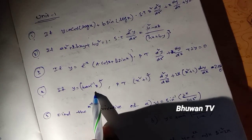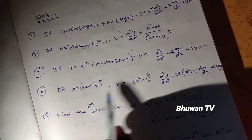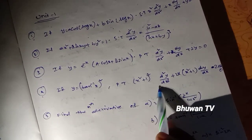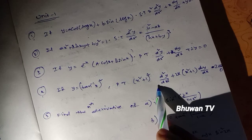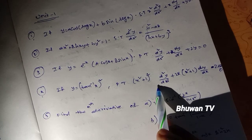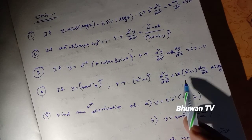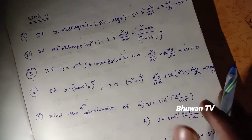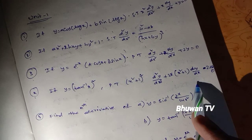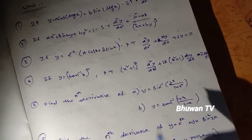Fourth question: if y equals (tan⁻¹ x)², prove that (x² plus 1)² d²y/dx² plus 2x(x² plus 1) dy/dx minus 2 equals 0.